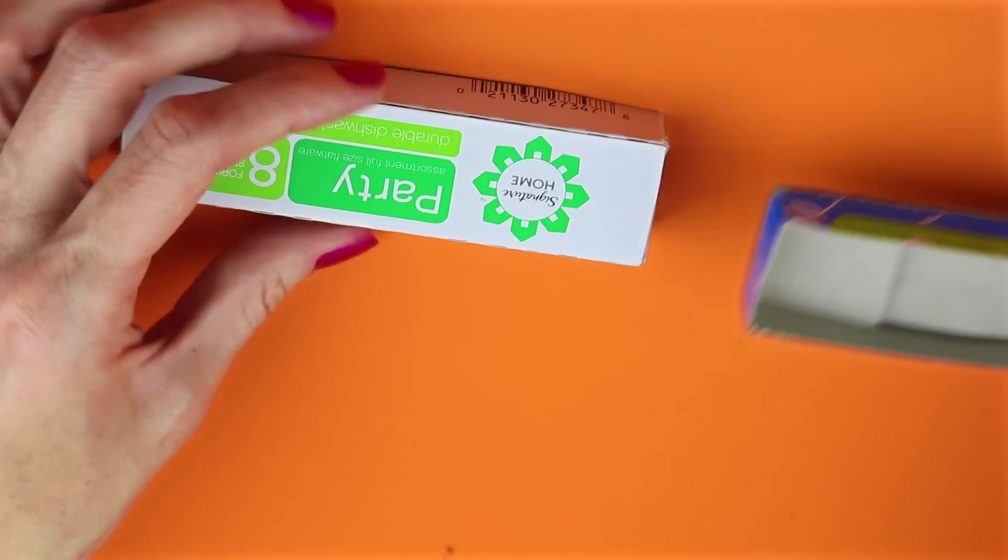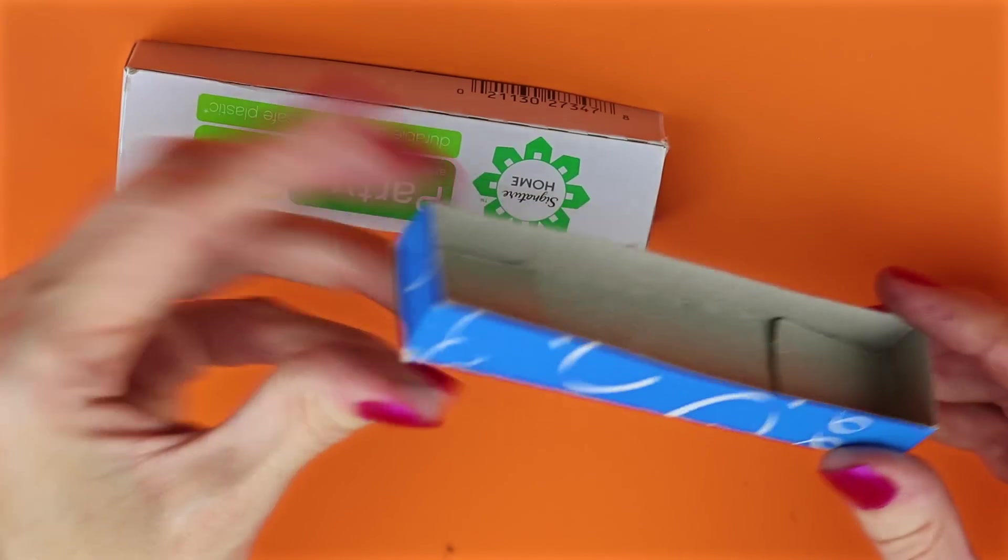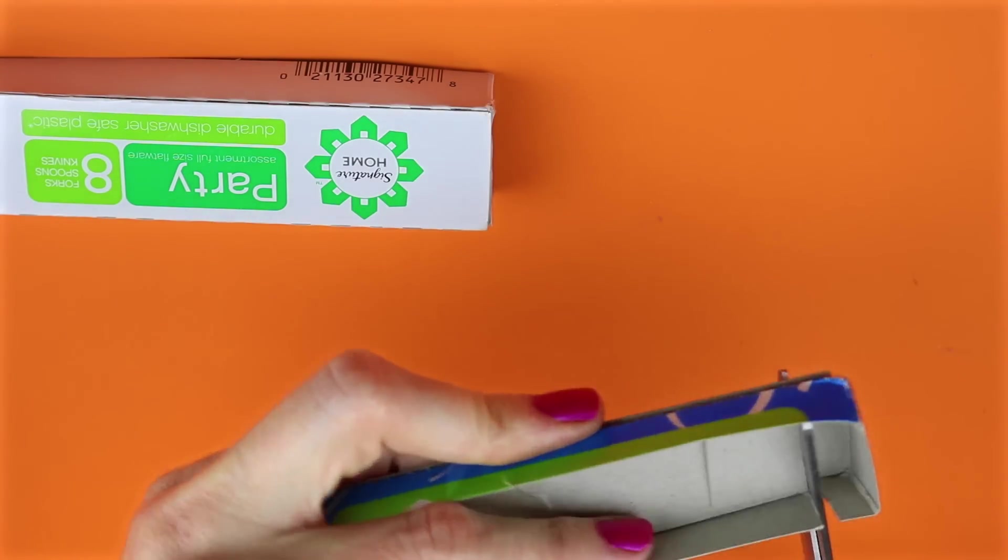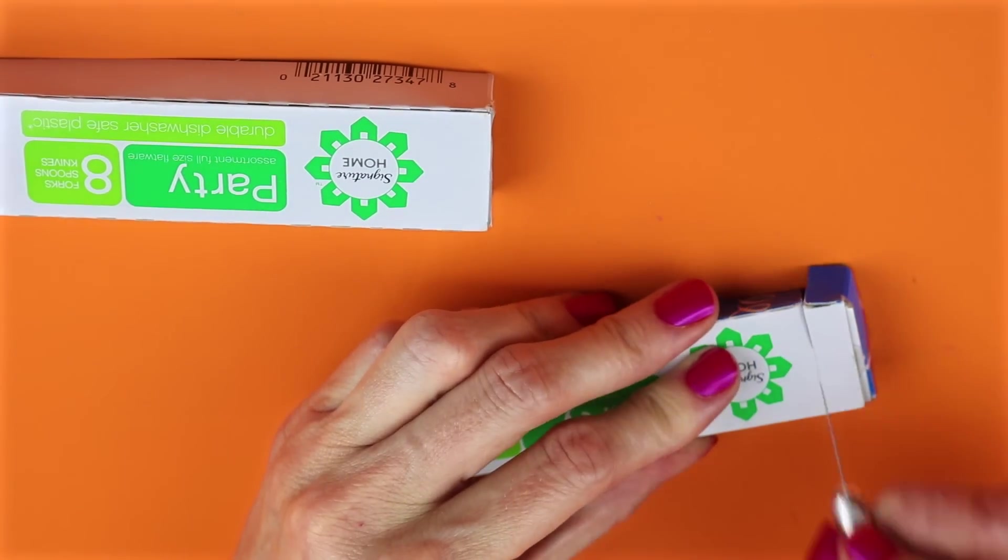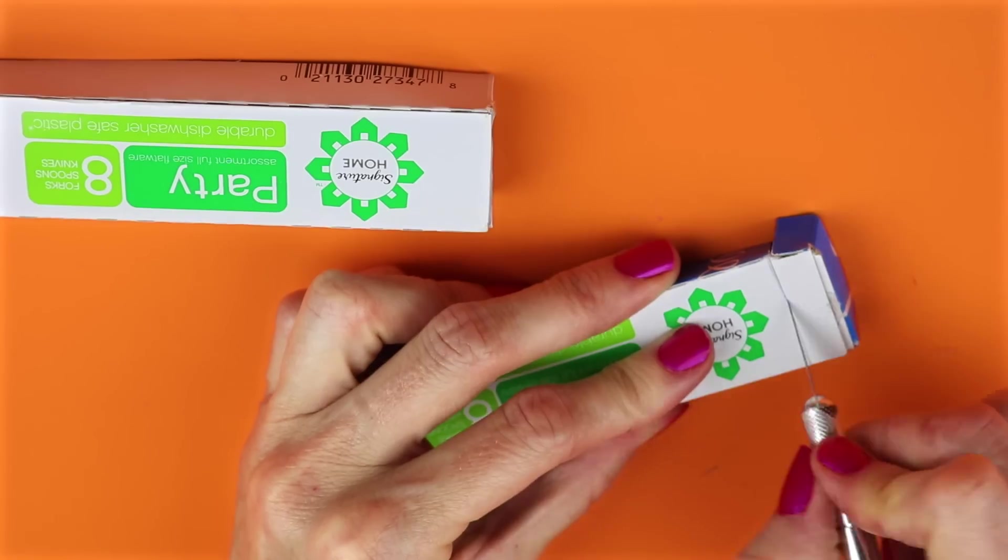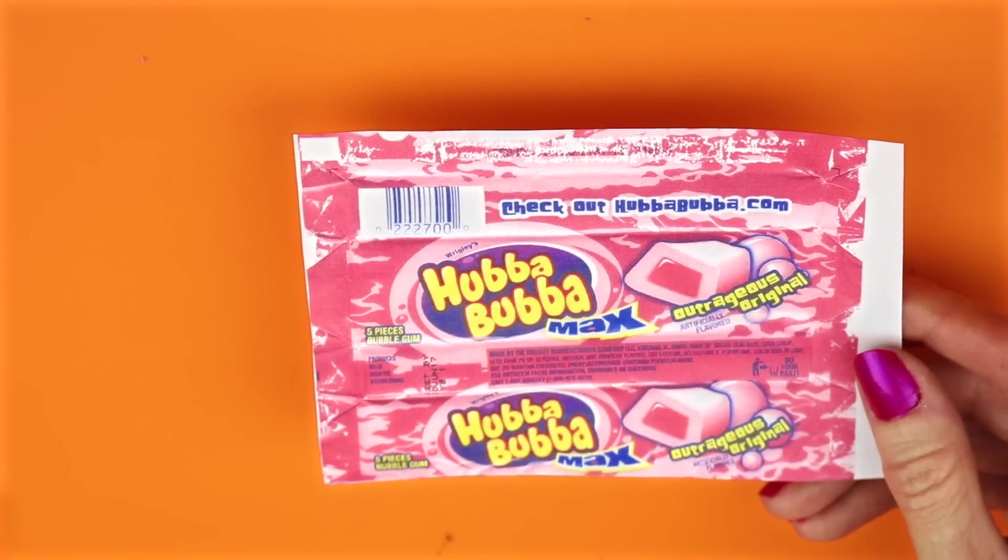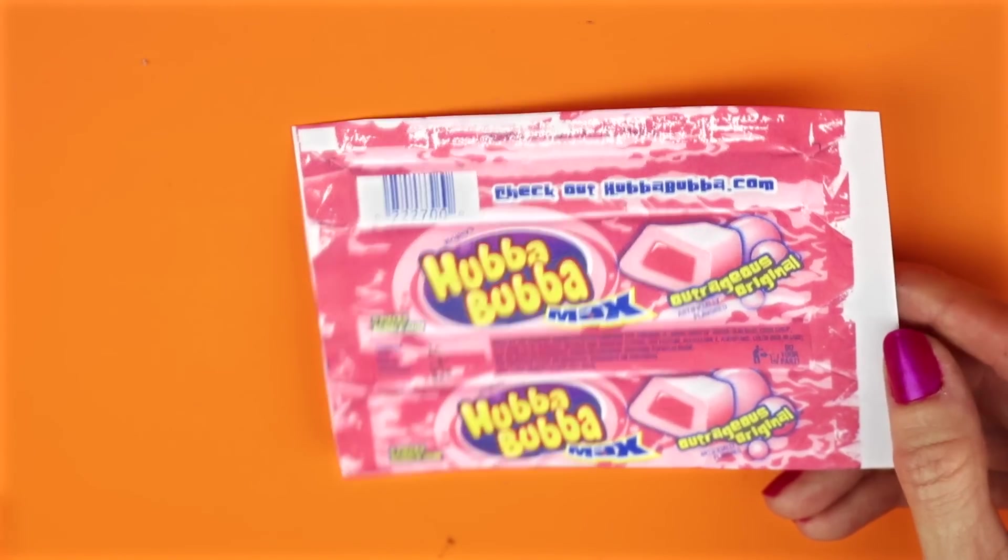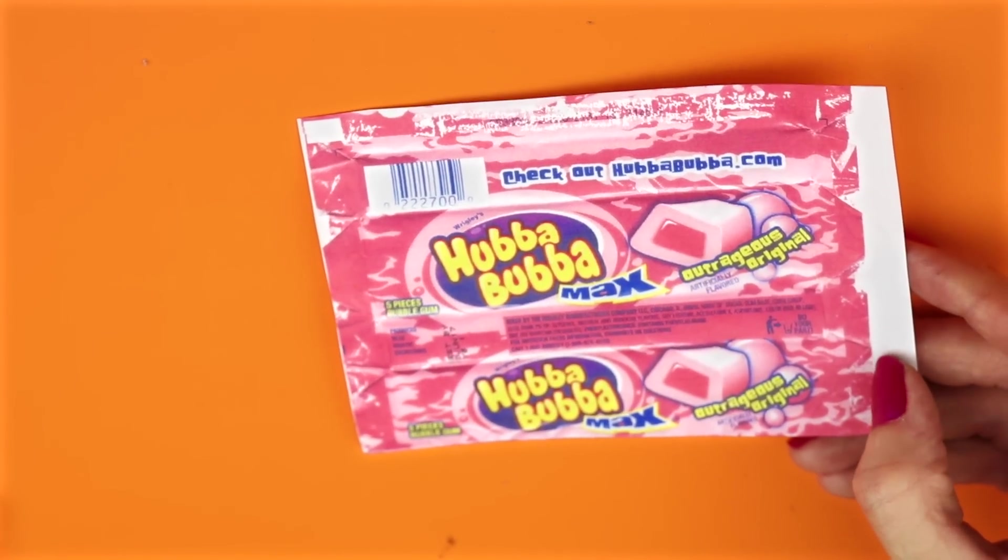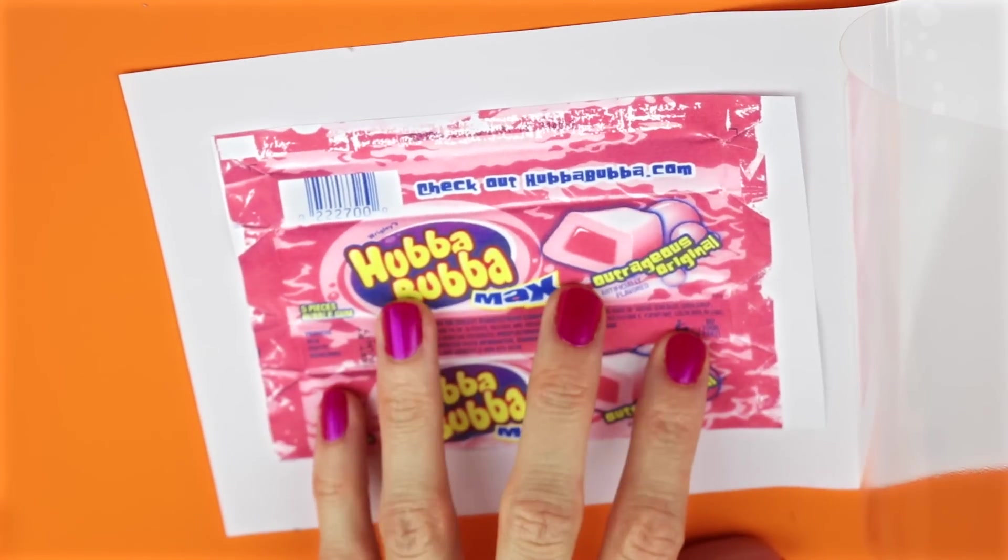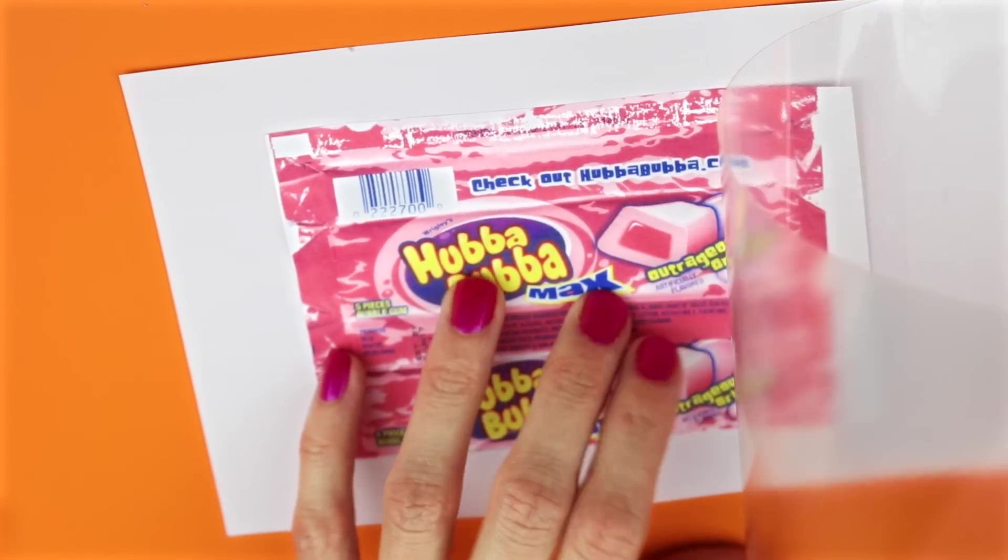As you see, it's just a little bit too big, so you'll want to trim off one of the ends. Print out the label and cut it down to size. I will leave a link down below where you can print this out. The next thing I did was I laminated the label. You can also use clear packing tape.